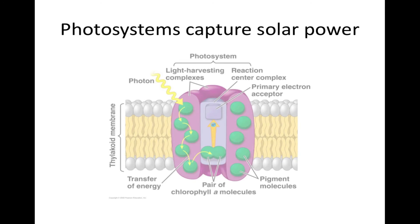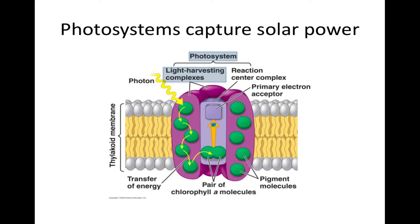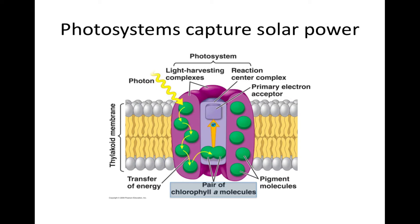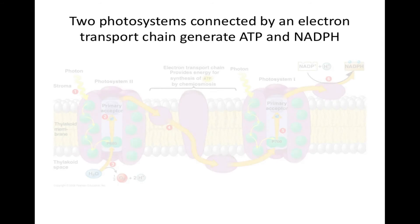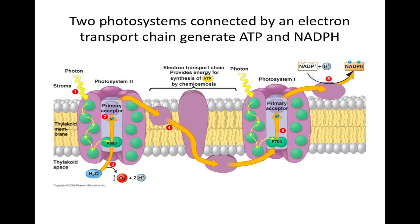Photosystems capture solar power. A photosystem consists of a number of light-harvesting complexes surrounding a reaction center complex. The light-harvesting complexes consist of pigment molecules bound to proteins. The reaction center complex contains a pair of chlorophyll A molecules and a molecule called the primary electron acceptor, which is capable of accepting electrons and becoming reduced. Two photosystems connected by an electron transport chain generate ATP and NADPH. In the light reactions, light energy is transformed into the chemical energy of ATP and NADPH. In this process, electrons are removed from water molecules and passed from photosystem II to photosystem I. Between the two photosystems, the electrons move down an electron transport chain and provide energy for the synthesis of ATP.